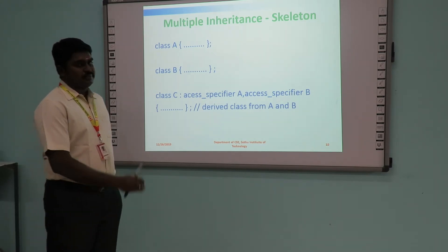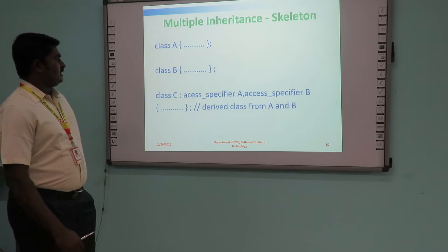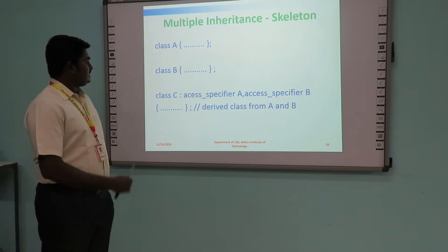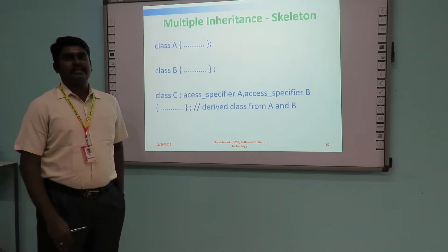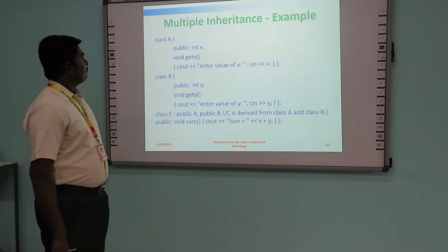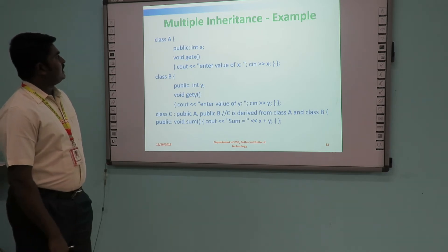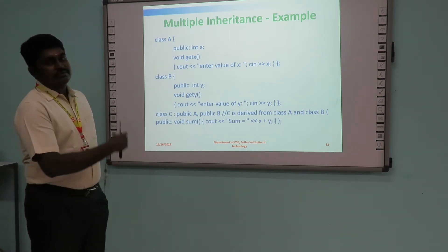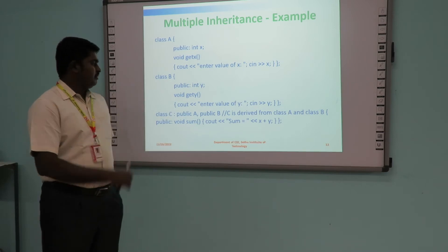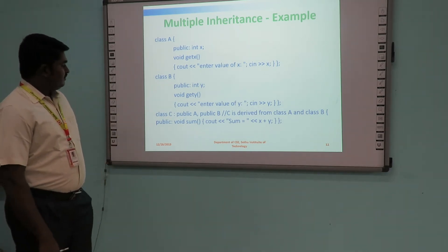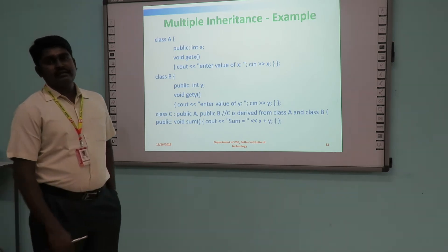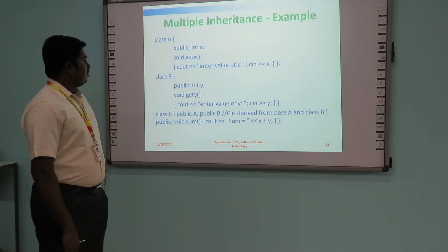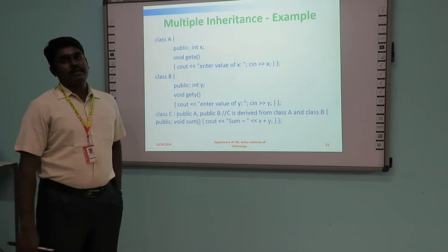The syntax for multiple inheritance has three different classes. The first two classes are base classes and the third one is the derived class. Derived class C will have both the members of A and B when we create an object of class C. In the example, base class A and base class B each have data members and member functions. Class C publicly inherits both A and B, so after creating the object for class C, it will have all members of A, B, and C.